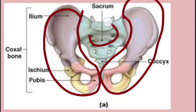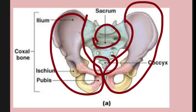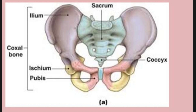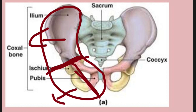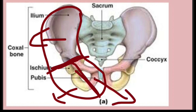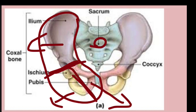The innominate bone is actually divided into three parts. The upper part is called the ilium, the yellow-colored part is called the ischium, and the pink-colored part is called the pubis. These are the three parts of the innominate bone. When it comes to the sacrum, five fused vertebrae combine together to form the sacrum, and four fused vertebrae combine together to form the coccyx.